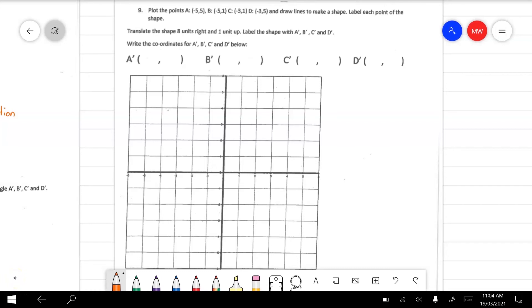Question 9 is a big question. We have to do a couple of things here. The first thing we have to do is we have to plot some points on the Cartesian plane. And then we need to translate or slide the shape. And we'll label its new position. Once we've done that we need to write down the coordinates of the new positions of point A, B, C and D. Something else that we need to talk about are coordinates.